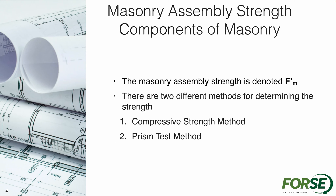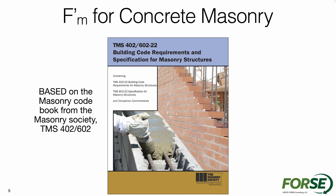How do we determine what F'M is? There are really two different methods for determining the strength. We have the compressive strength method and we also have the prism test method that can be utilized to determine F'M. The most common is going to be the compressive strength method, and that's going to be defined within the code — the TMS 402/602 code from the Masonry Society.